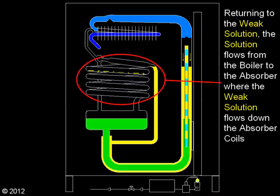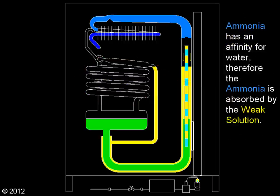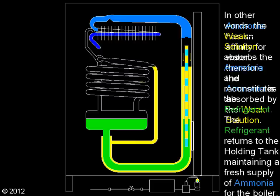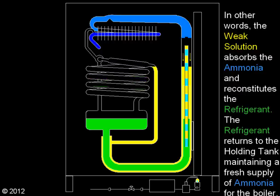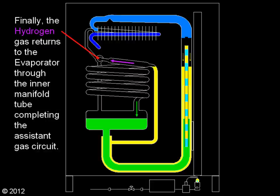Returning to the weak solution: the solution flows from the boiler to the absorber, where the weak solution flows down the absorber coils. Ammonia has an affinity for water; therefore, the ammonia is absorbed by the weak solution. In other words, the weak solution absorbs the ammonia and reconstitutes the refrigerant. The refrigerant returns to the holding tank, maintaining a fresh supply of ammonia for the boiler. Finally, the hydrogen gas returns to the evaporator through the inner manifold tube, completing the assistant gas circuit.